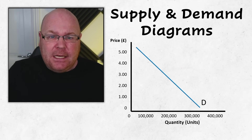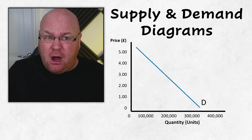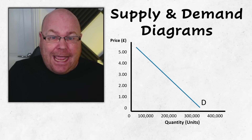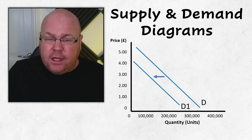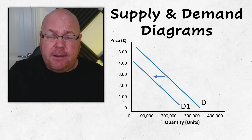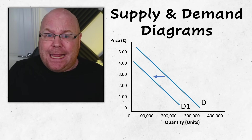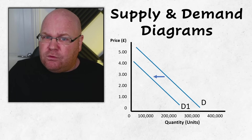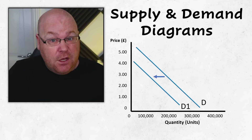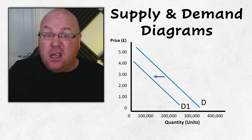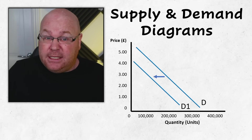There might also be scenarios where at the same price fewer consumers are willing to purchase that product, and we can represent that diagrammatically with a shift in the demand curve. This time the shift would be inwards or to the left, representing that at a particular price there are now fewer consumers that want to purchase that product.